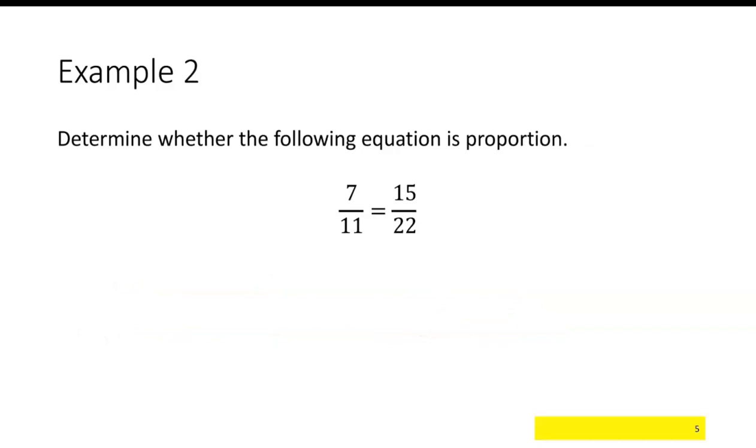Let's try another one. Let's see if 7 elevenths is equal to 15 over 22. Well, 7 times 22 is 154. 11 times 15 is, well, 10 times 15 is 150, plus 15 is 165. And you see that these are not equal. This is not a proportion.